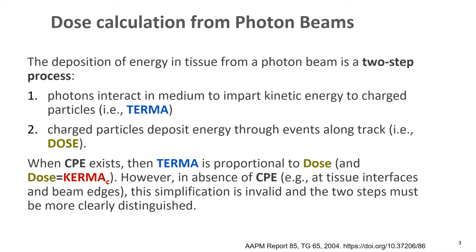If we have a photon beam that deposits energy in tissue, this is really a two-step process. First, photons interact in the medium to impart kinetic energy to charged particles. Then the charged particles deposit energy through collision events along the track, and that is where we get our dose.